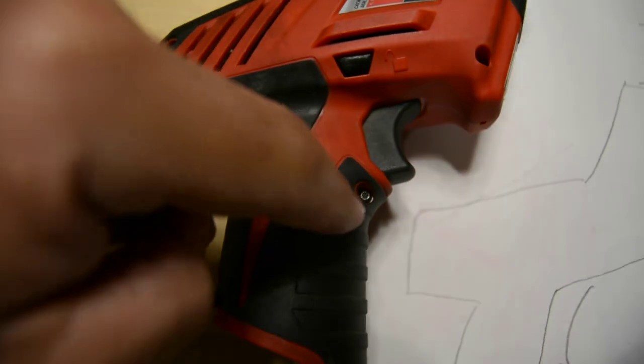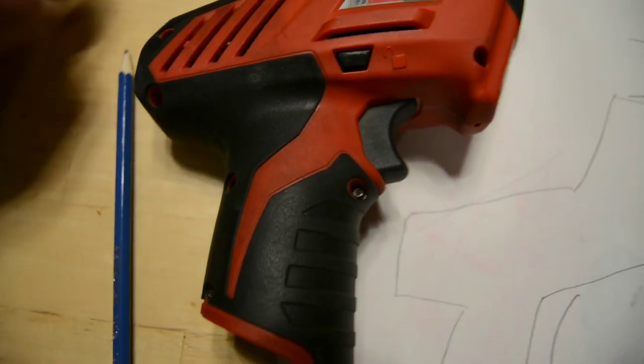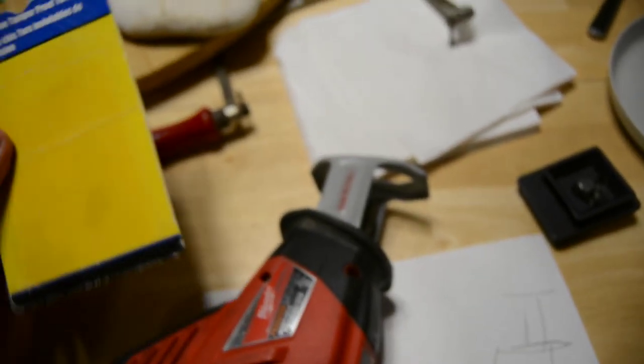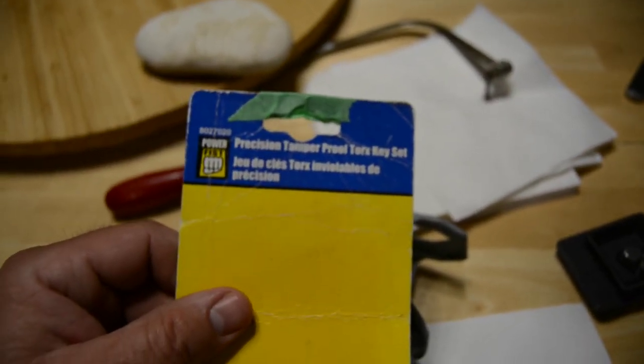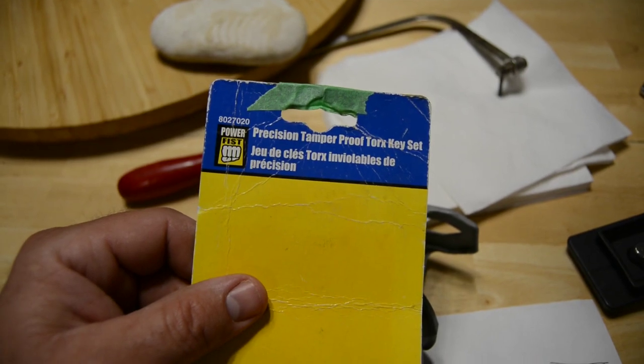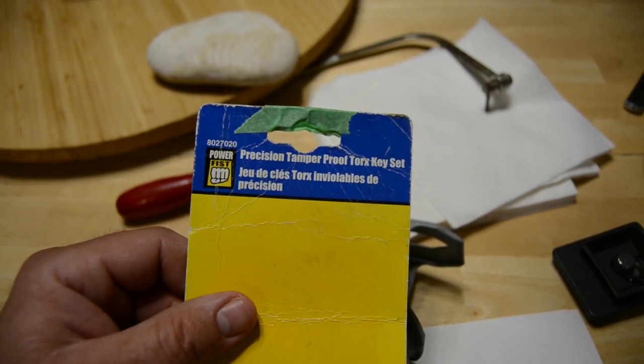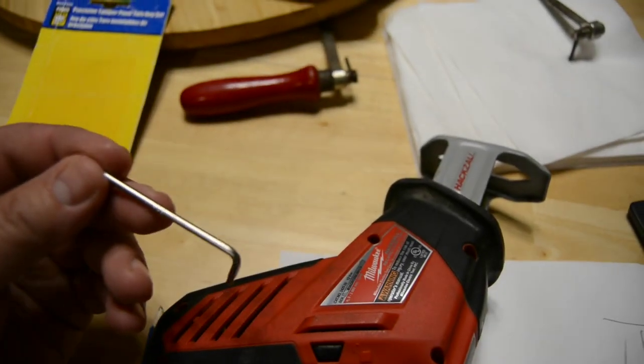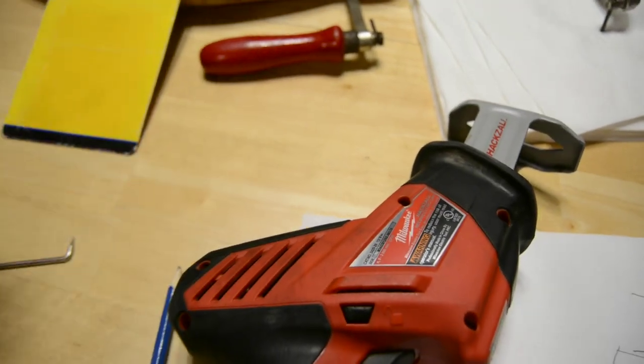There are these Torx screws on here. Invest, if you have seen any of my other videos, invest in something like this. It's a tamper proof Torx set. They're all very small. This is a T8 and they go down to T3.